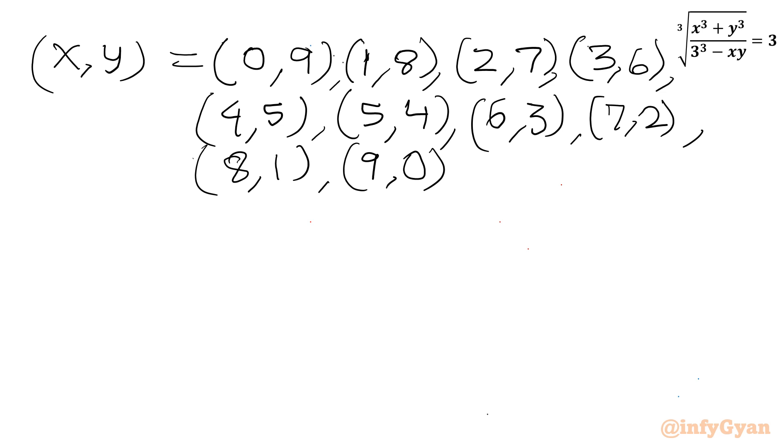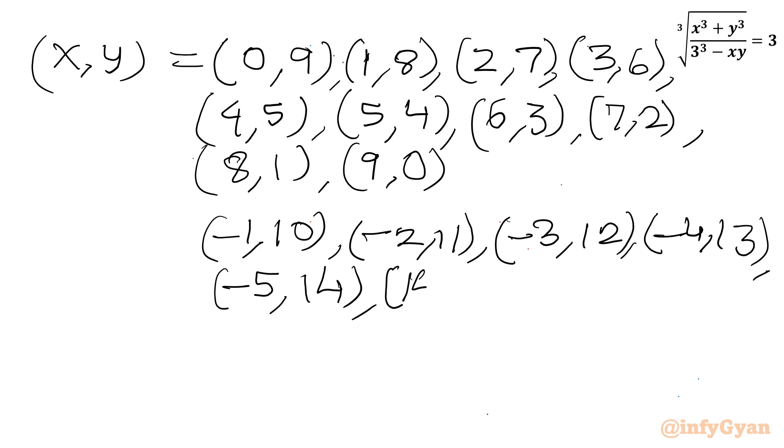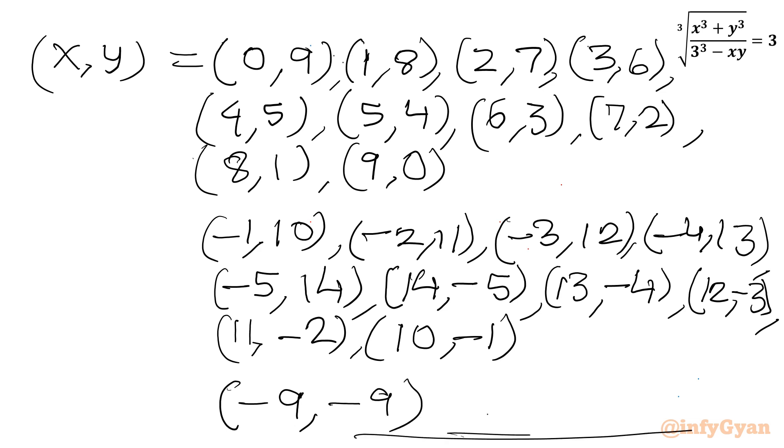Then I will be writing our remaining 10 with negative values. So I will be writing minus 1, 10. Then I will consider minus 2, 11. Then minus 3, 12. Then minus 4, 13. Then I will be writing minus 5, 14. Then I will swap x, y. So it would be 14 comma negative 5, 13 comma negative 4. Then 12 comma negative 3. Then 11 comma negative 2. And last value I will be writing 10 comma negative 1. So 10 plus 10, 20. And the third solution pair it would be minus 9, minus 9. So these are our final ordered pairs.